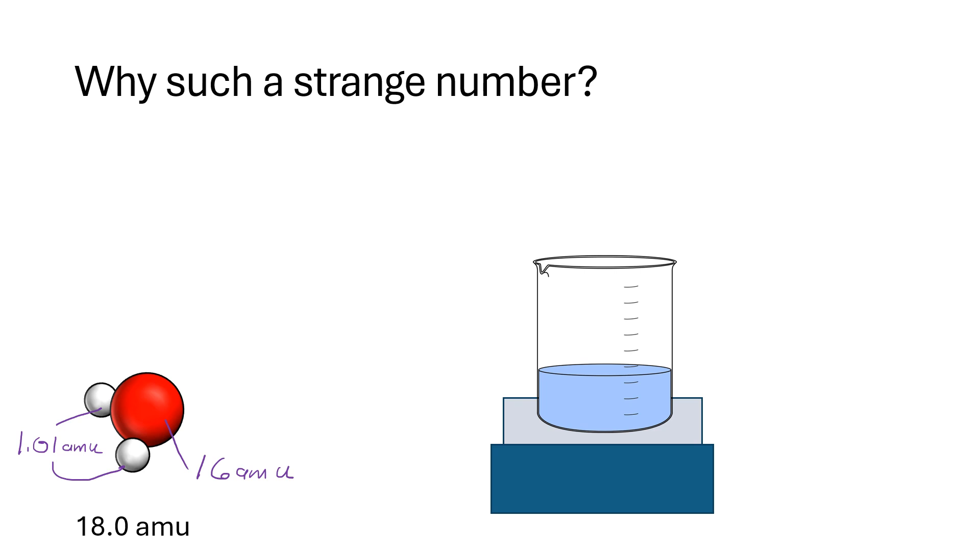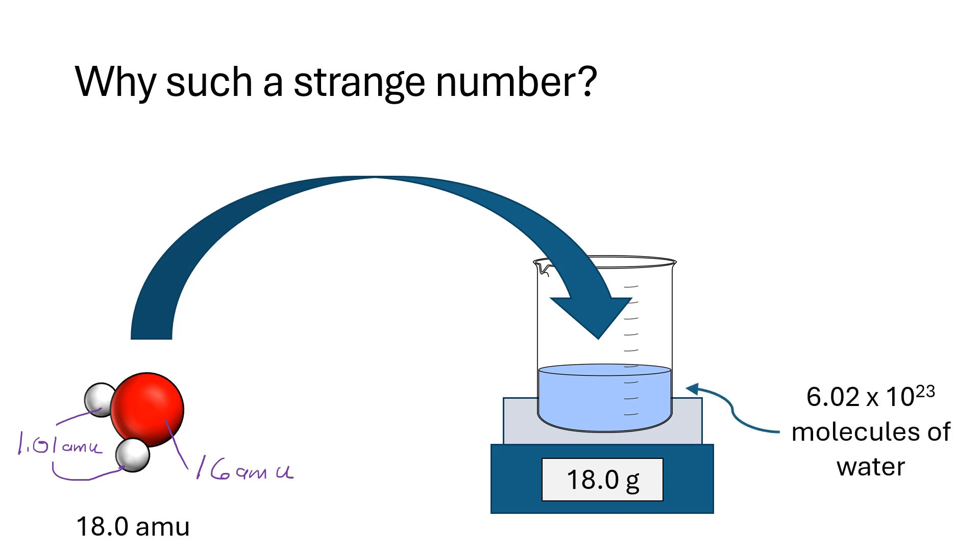If you can imagine an experiment, because we can't really do this because we can't manipulate individual molecules, but if you could imagine an experiment in which we take individual molecules of water and put them into a beaker of water, and you keep putting these individual molecules into this beaker until the scale that this beaker is sitting on tells you that you've got 18 grams of water in that beaker. If you were counting as you put those molecules in, you would discover that you were at 6.02 times 10 to the 23rd molecules of water. It takes that many to make the weight in grams equivalent or have the same number as the weight for a single molecule in atomic mass units. So that's why we have such an unusual number for Avogadro's number.